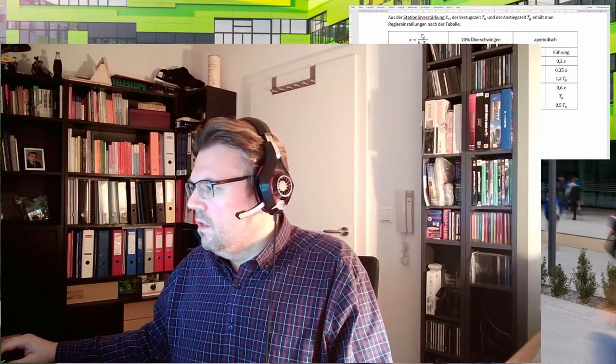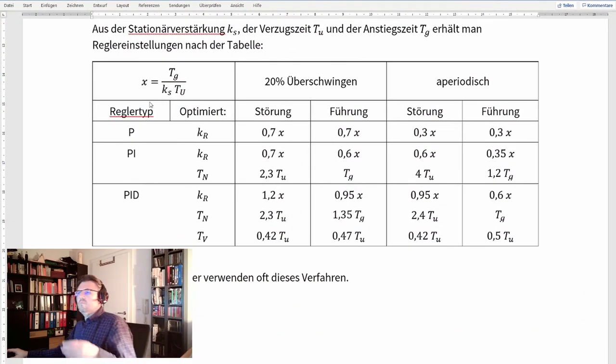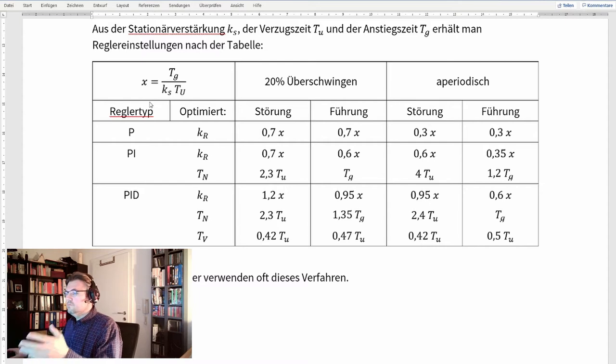So these three persons—Chien, Reswick, and Hrones—they developed rules for this. Let's have a look at these rules. You see, if we have this x here...